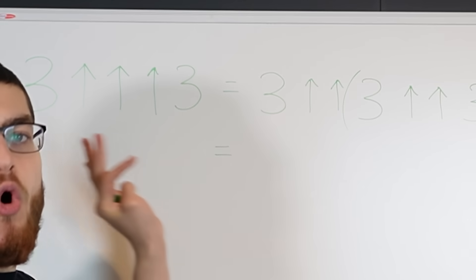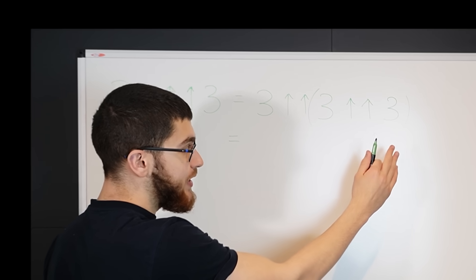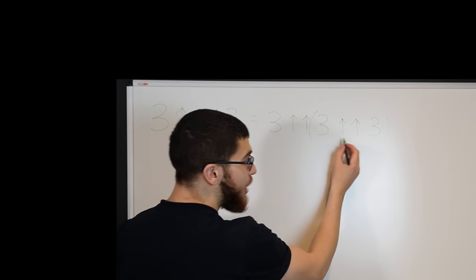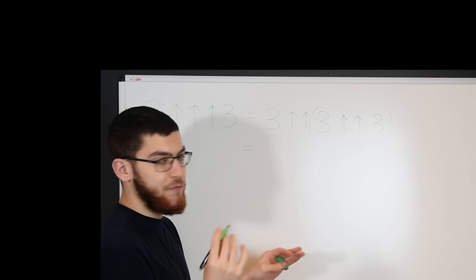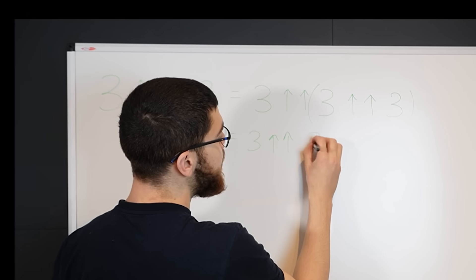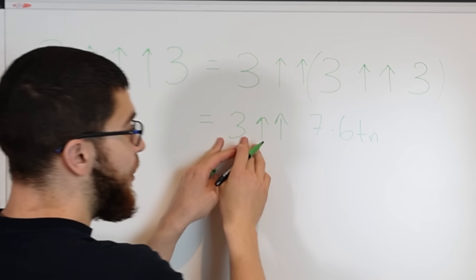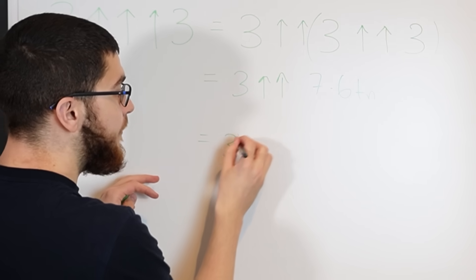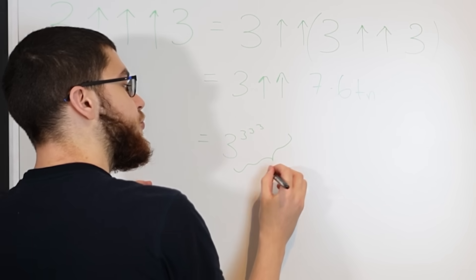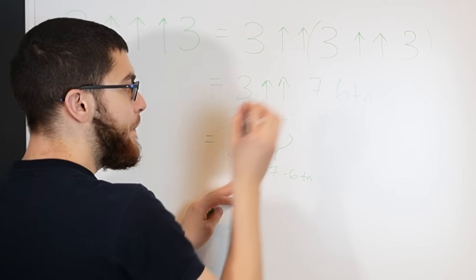What about 3↑↑↑3? This is 3↑↑3 repeated 3 times, but we do the last part first. So 3↑↑3 is 7.6 trillion, meaning this becomes 3↑↑(7.6 trillion), which is a power tower of 3s repeated 7.6 trillion times — a massive power tower you can't even begin to imagine.